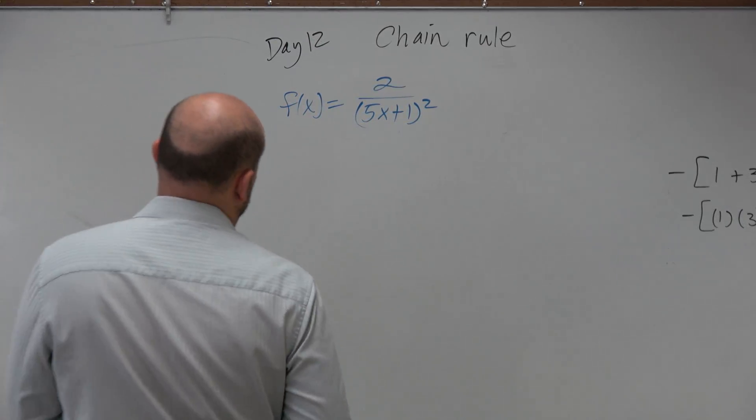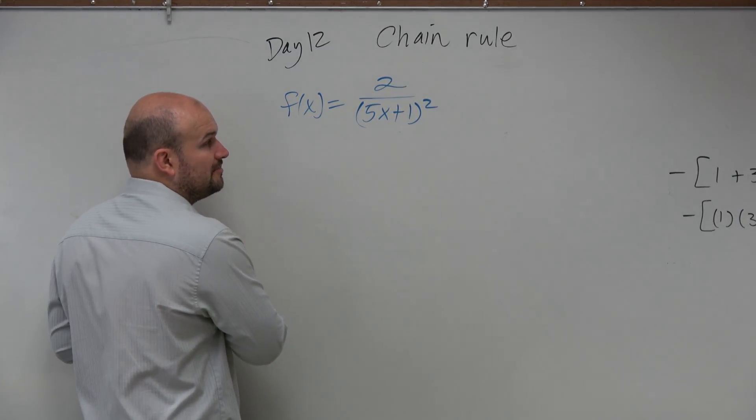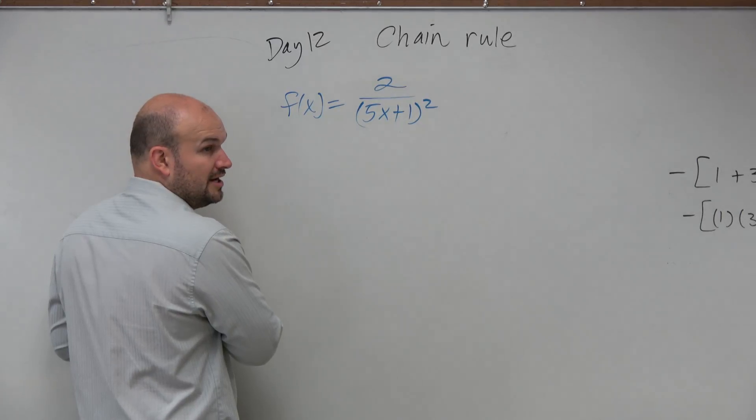What's going to happen is, if we want to find the derivative of this, we know that we can break this up into 2 over x squared, right?